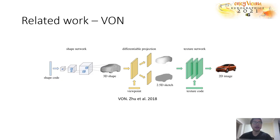We were particularly inspired by the recently proposed Visual Object Networks (VON), which takes a generated rough shape and trains a 2D texture network to synthesize the final images. However, they directly output final RGB images and do not provide access to interpretable feature maps in the middle of the generation process, which prevents direct illumination control.